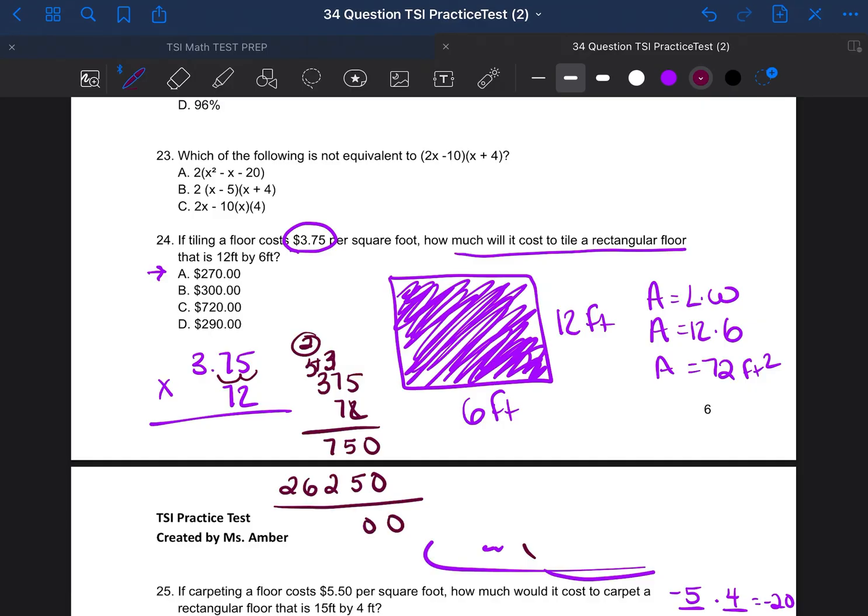And then we're going to go ahead and we're going to add. 0, 0, 10. 7 plus 2 plus 1 is 10. Carry the 1. 6 plus 1 is 7. And bring down the 2.